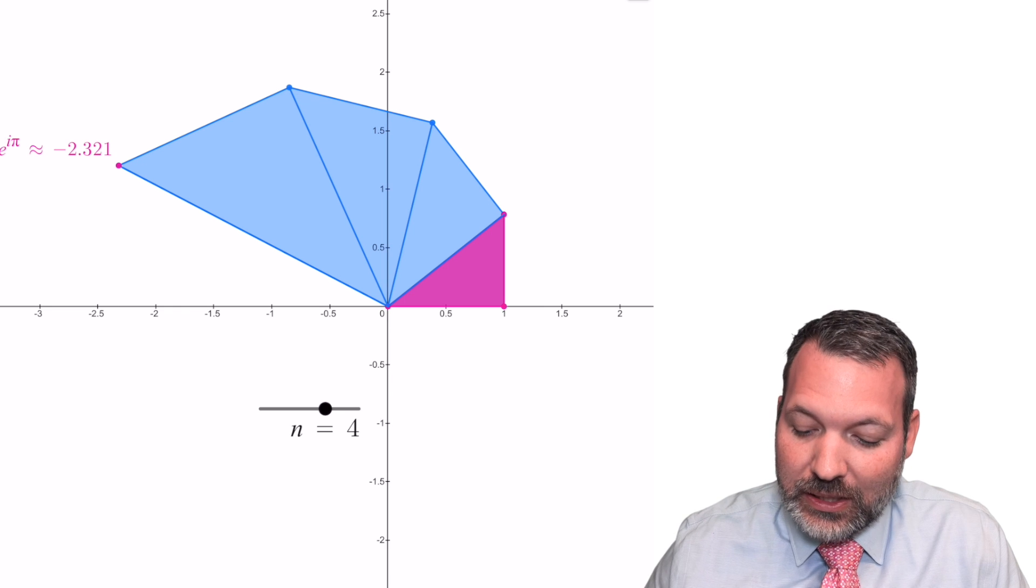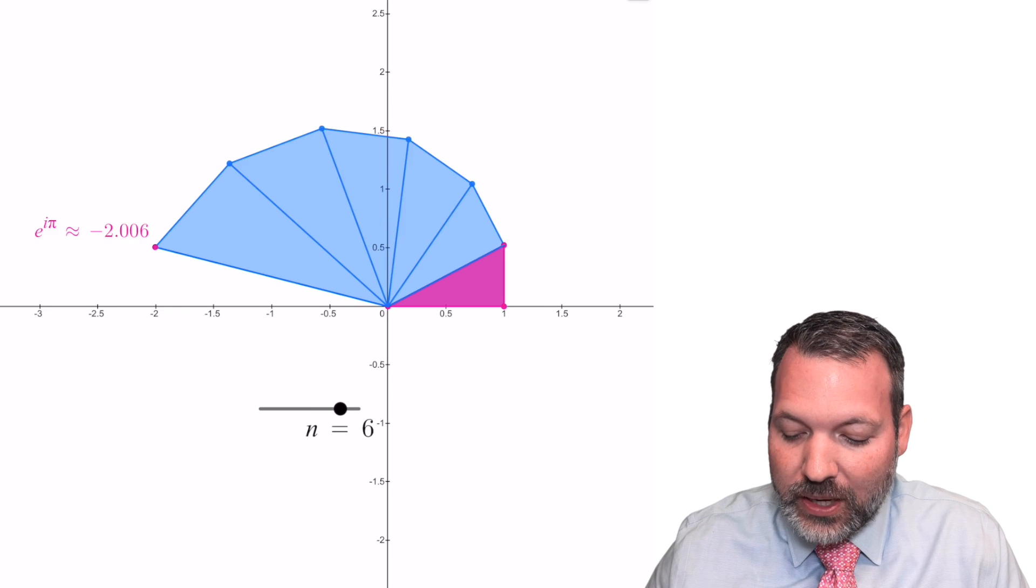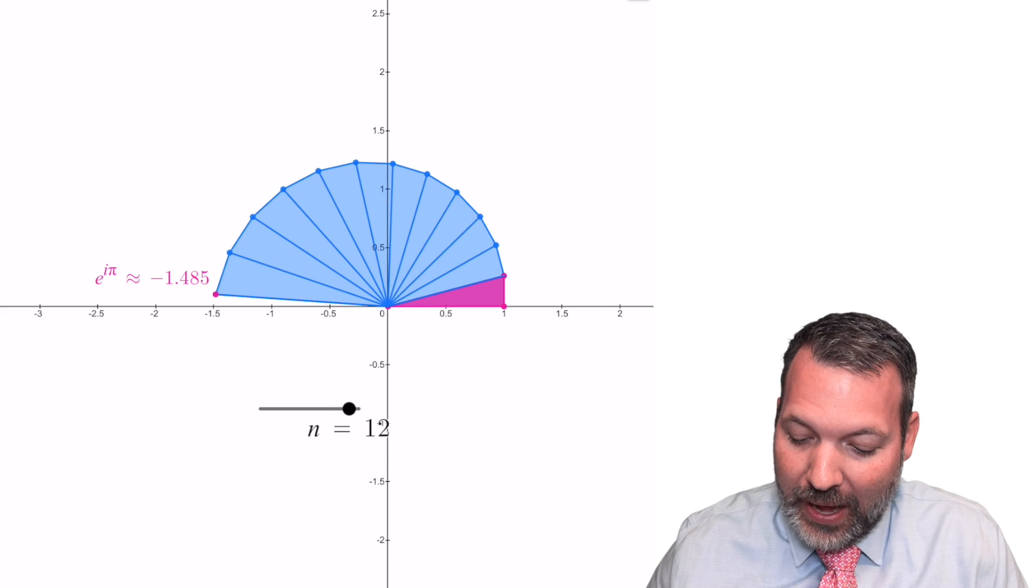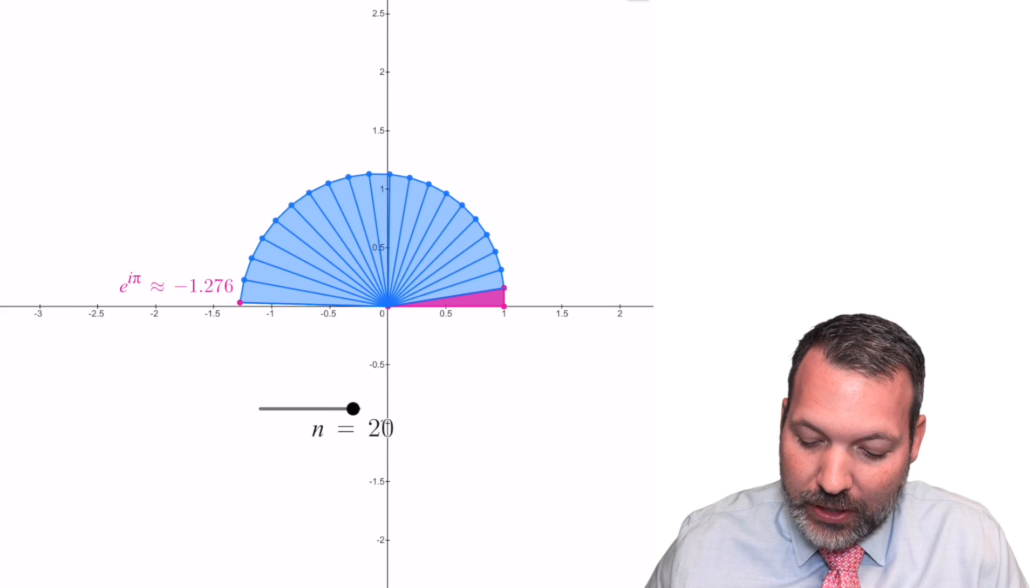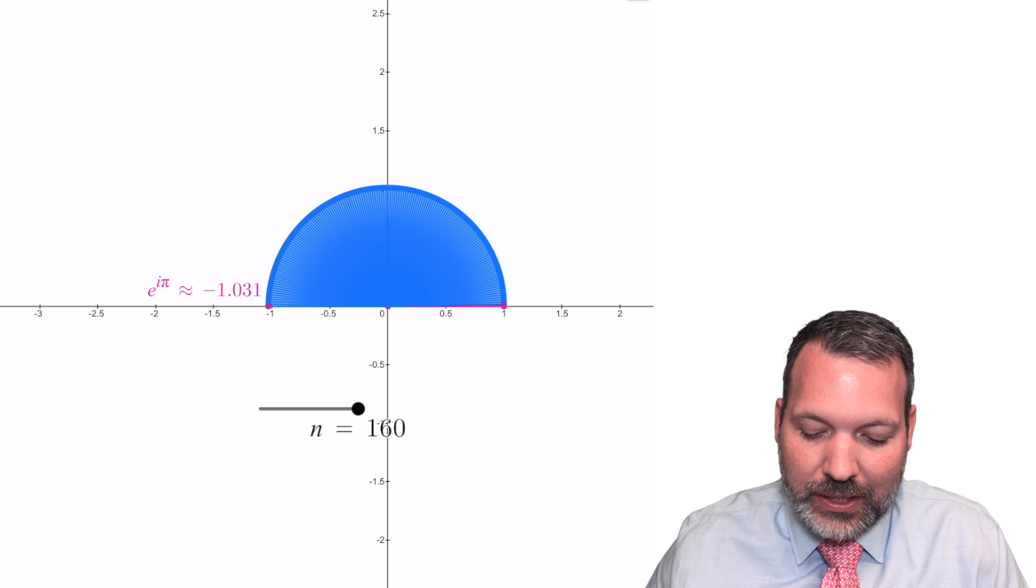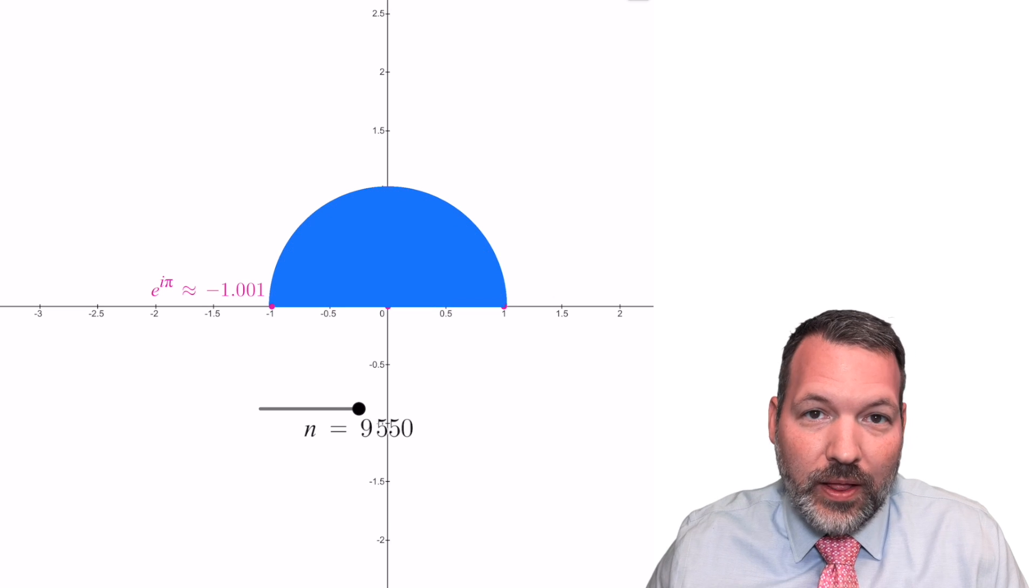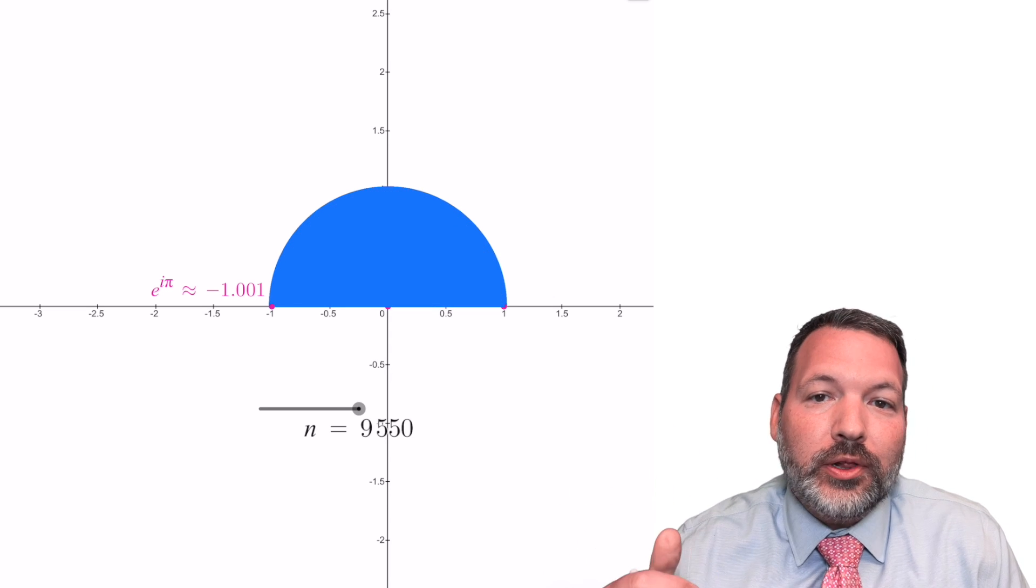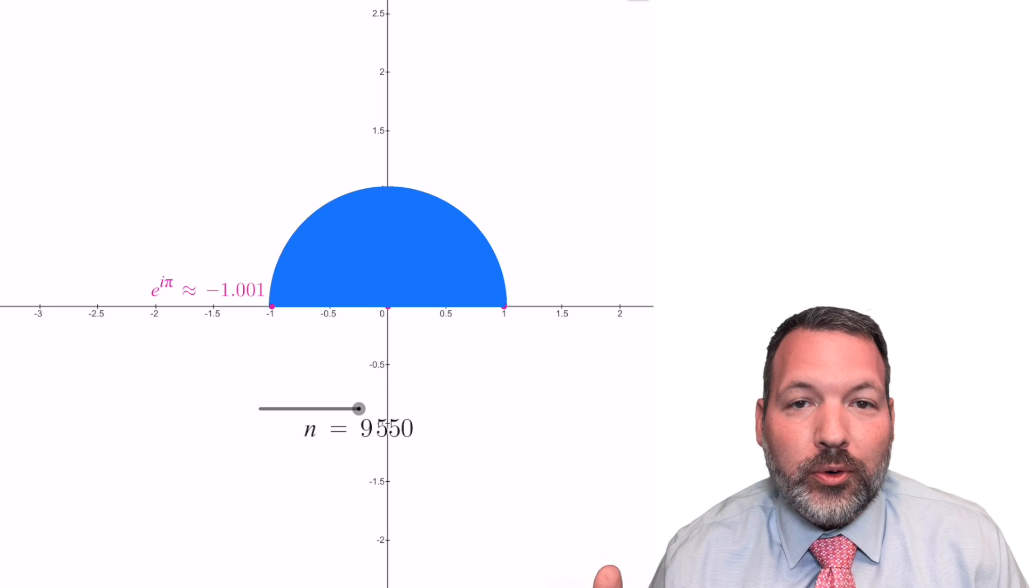And so this little toy in Desmos is literally showing us the limiting process that helps us figure out the value for e to the i pi. And you can see here it is, here it comes. As we let n increase, increase, increase, get as large as we want, the value, that final vertex gets closer and closer to negative 1 on our real axis.